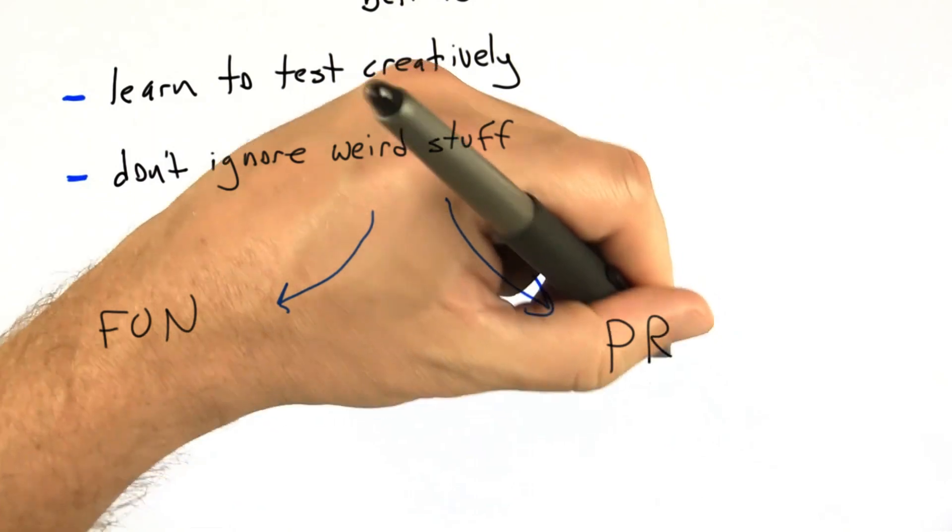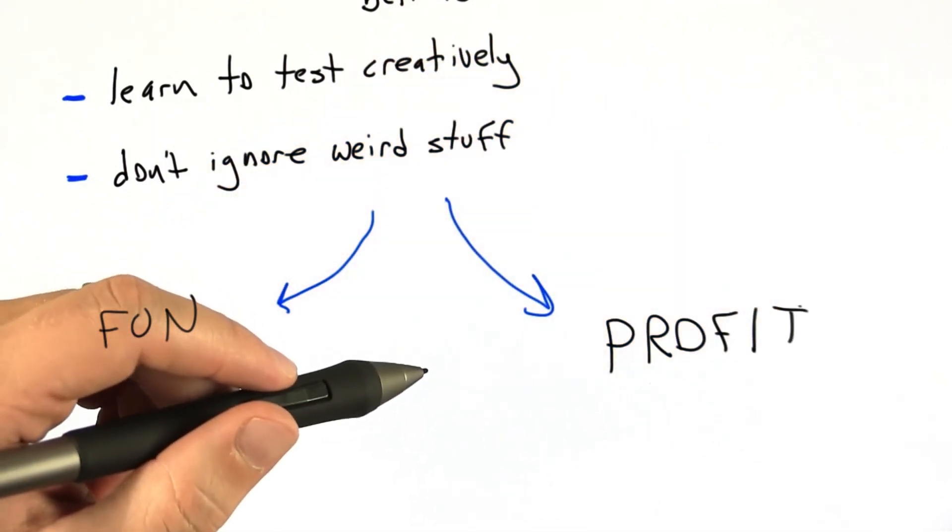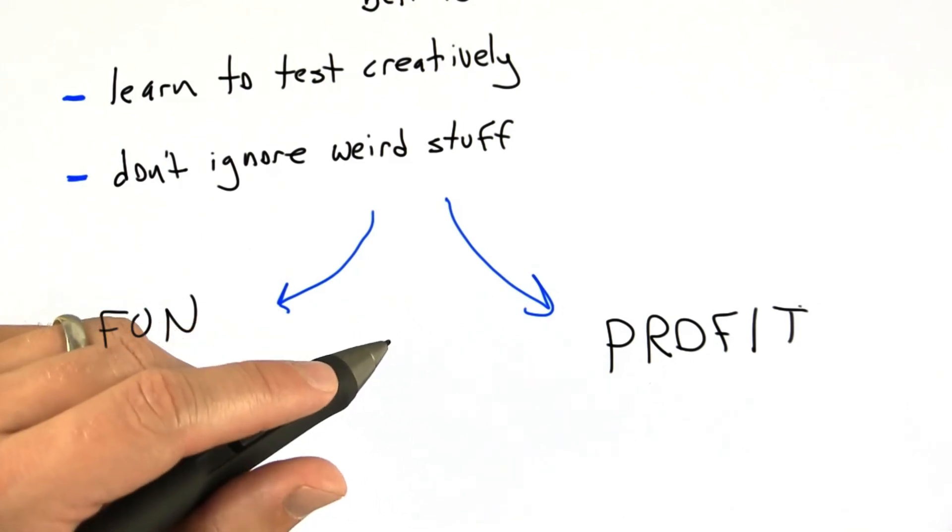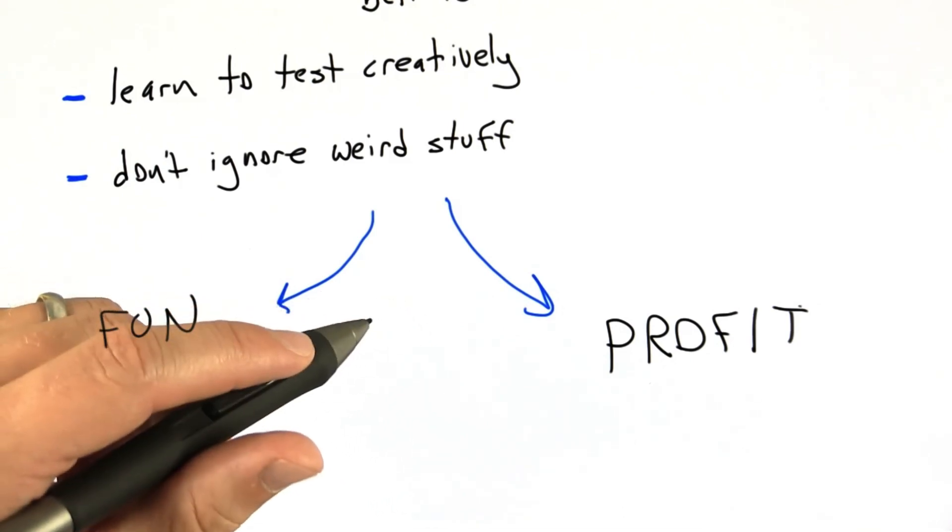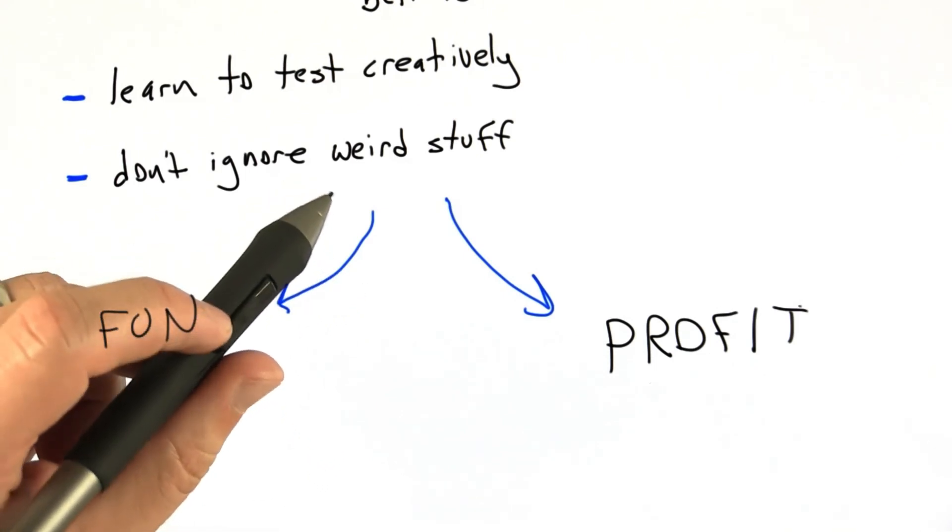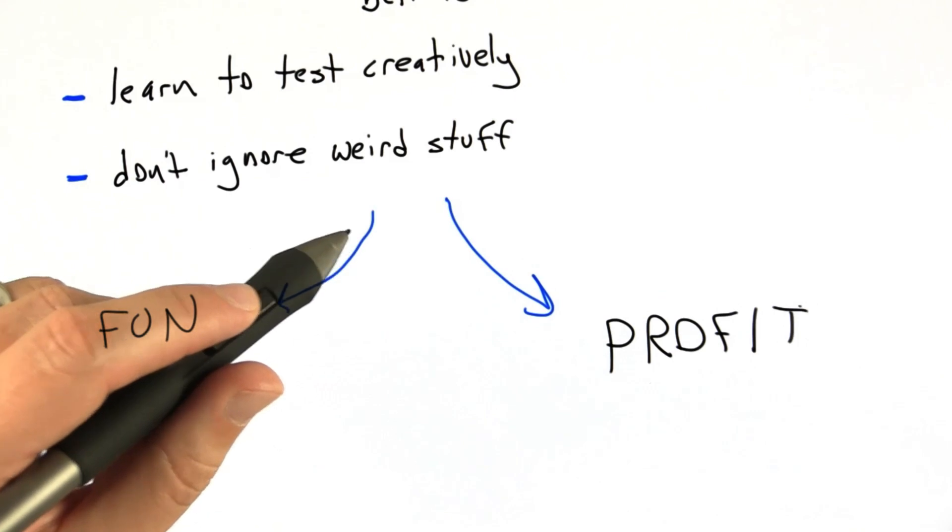Great testing can also be profitable. What I mean here is that testing is a separate career at many companies like Microsoft. And companies like Google and Mozilla offer bug bounties. What this means is, if you find a security critical bug in, for example, Google Chrome, they'll pay you up to $20,000.